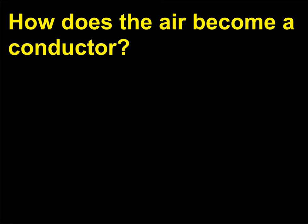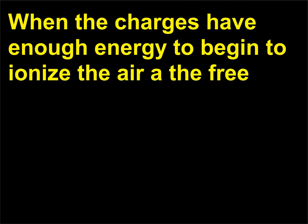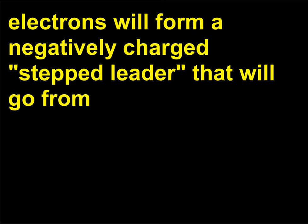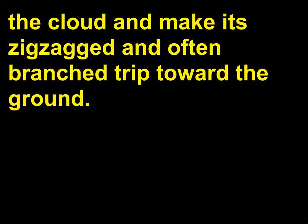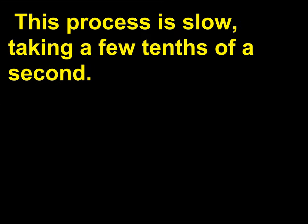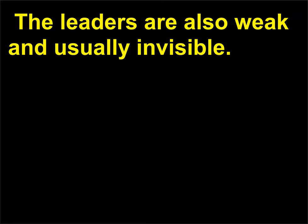How does the air become a conductor? When the charges have enough energy to begin to ionize the air, free electrons will form a negatively charged step leader that will go from the cloud and make its zigzagged and often branched trip toward the ground. This process is slow, taking a few tenths of a second. The leaders are also weak and usually invisible.